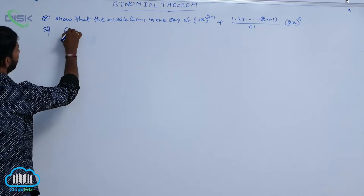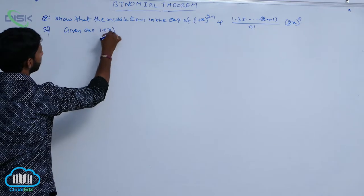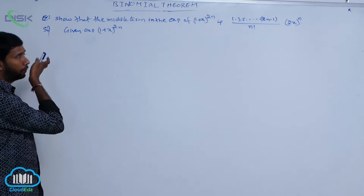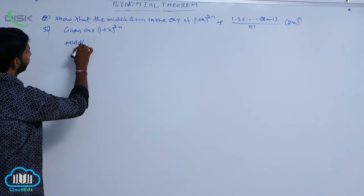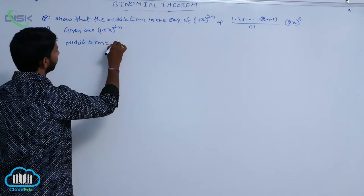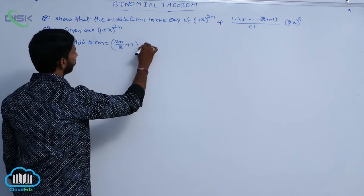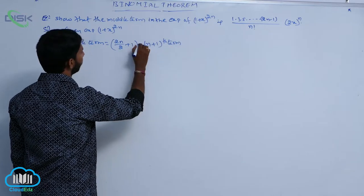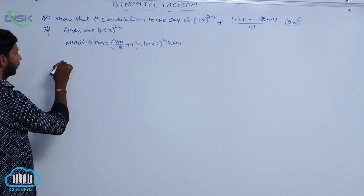The given expansion is (1+x)^(2n). Here the middle term: since 2n is even, the middle term is the (2n/2 + 1)th term, that is equal to the (n+1)th term.